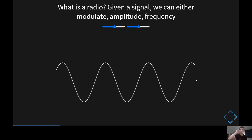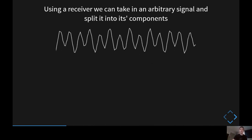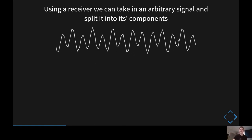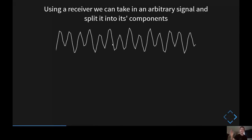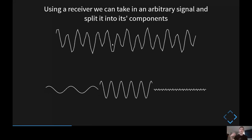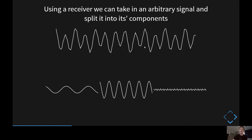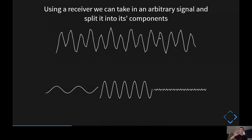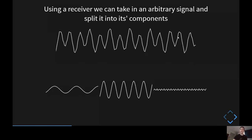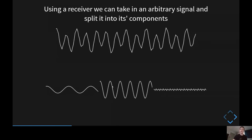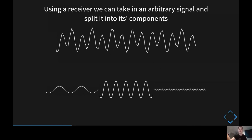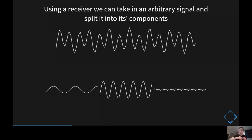Now looking at the viewpoint from the receiver. In a perfect world, the receiver would only be receiving the signal we're sending out. But in reality, we're always surrounded by a ton of different electromagnetic signals and background radiation. The good thing is we can take an incoming signal and split it into its component frequencies. The important thing is when we split it into its components, we preserve the amplitude — so we know which frequencies we're getting that are powerful and which have a low amplitude.